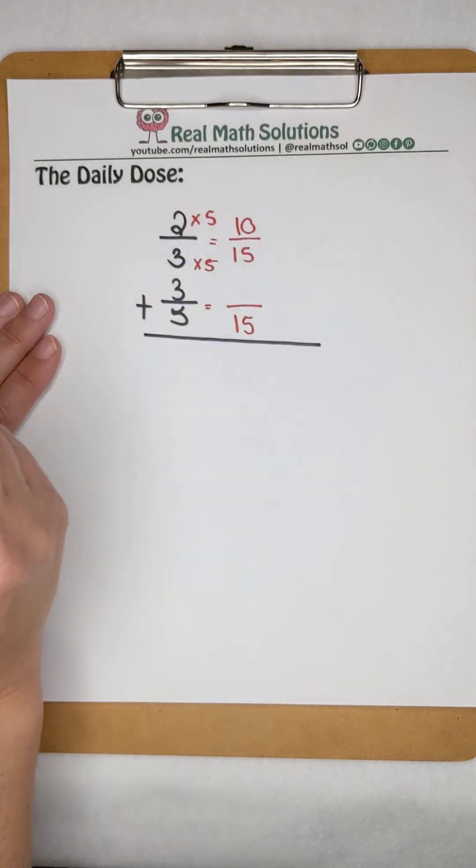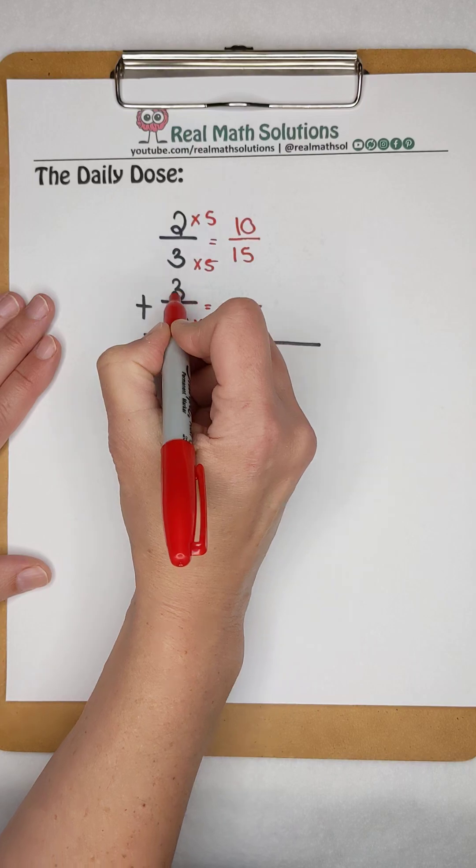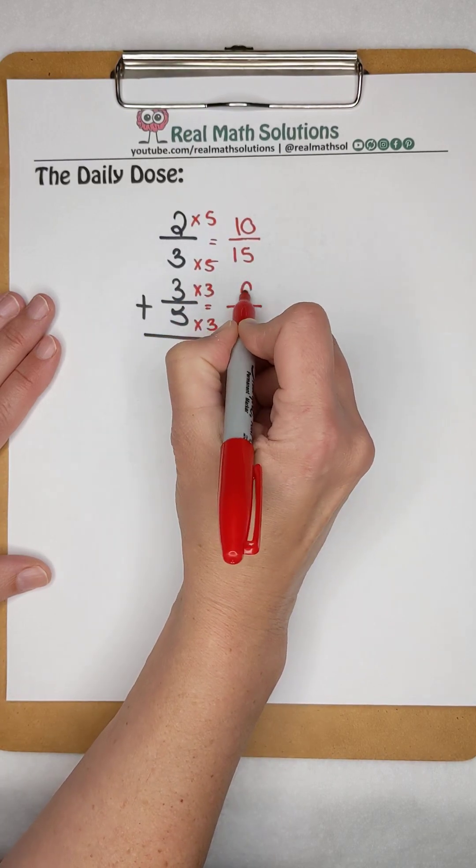2 times 5 gives me 10. Same thing on the bottom. 5 times 3 gives me 15, so 3 times 3 gives us 9.